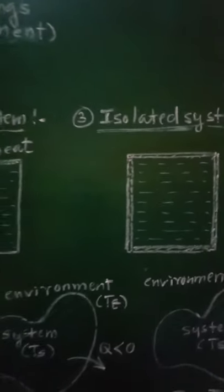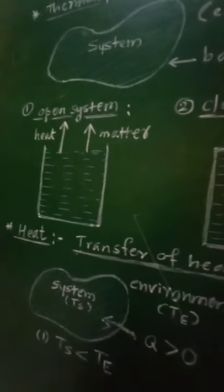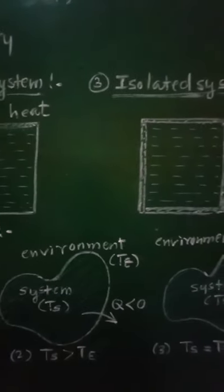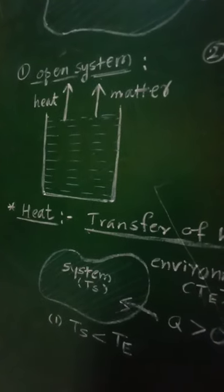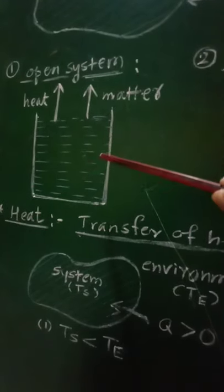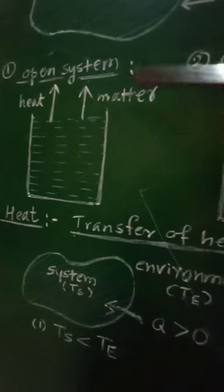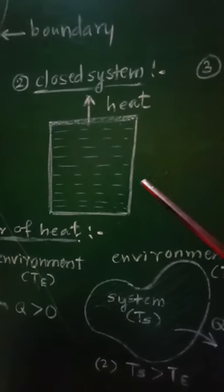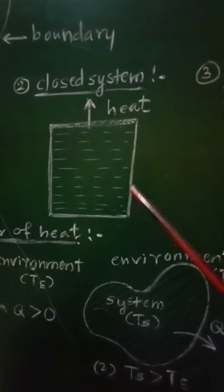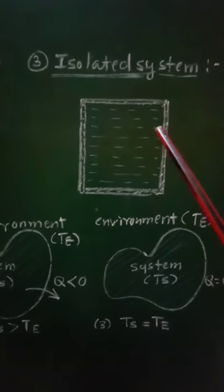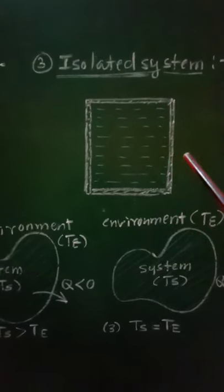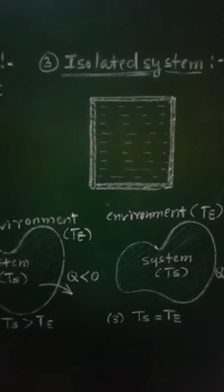So these are the three different types of thermodynamic systems: open system, closed system, and isolated system. If the system is open, there will be exchange of both heat energy as well as matter. If it is a closed system, there will be only exchange of heat and not matter. If it is an isolated system, there will be no exchange of both heat energy as well as matter.